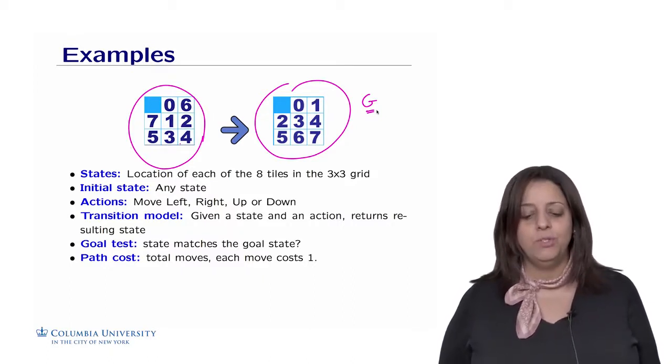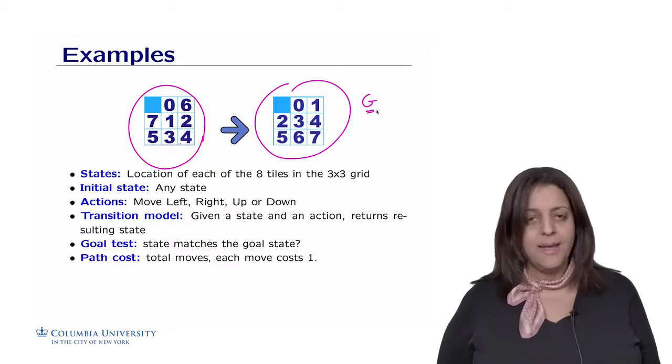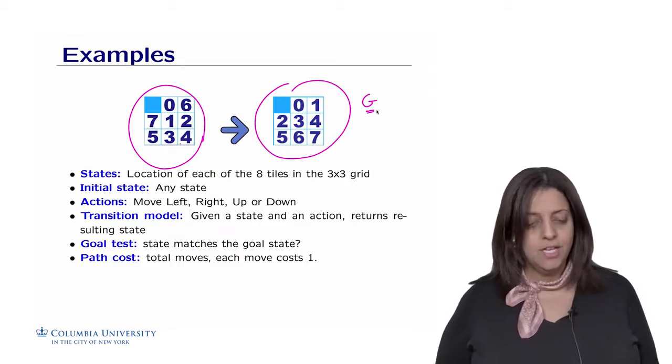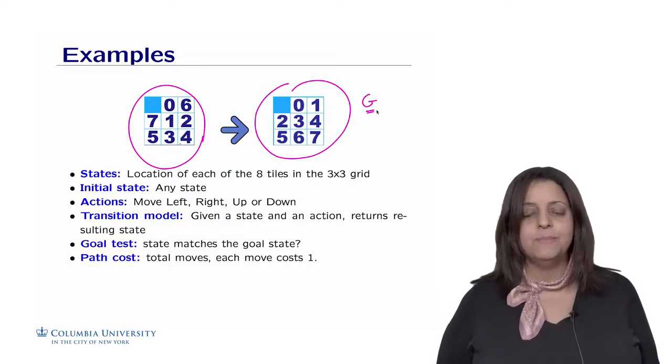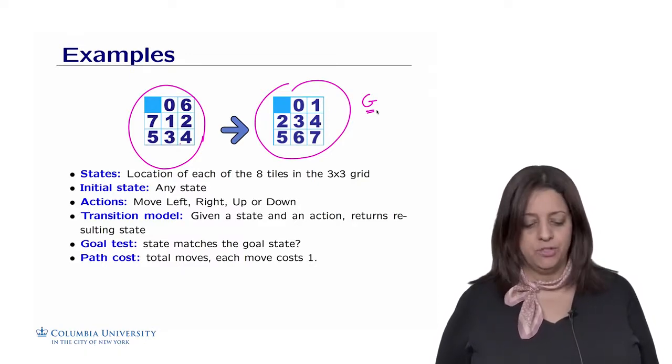So this can be assessed by the number of moves. So the total number of moves where each one costs 1 could be an assessment of how well we are doing in reaching the goal.